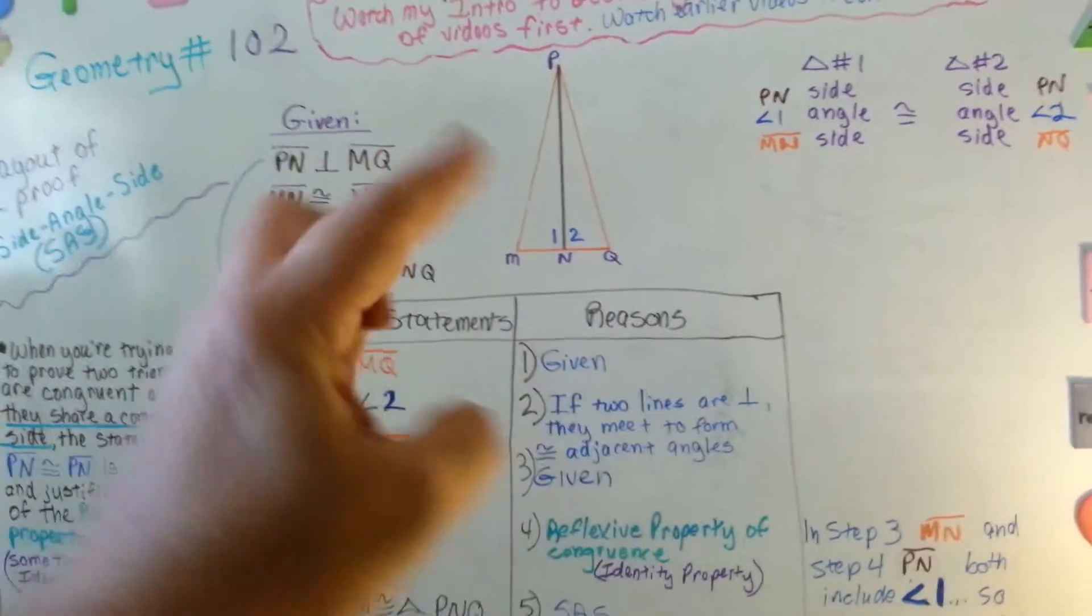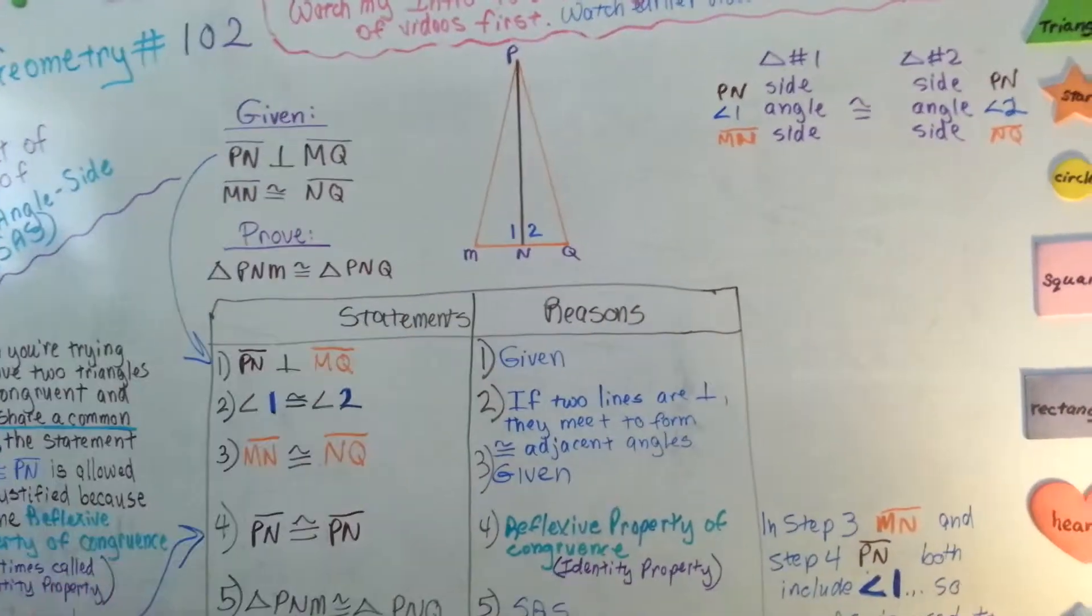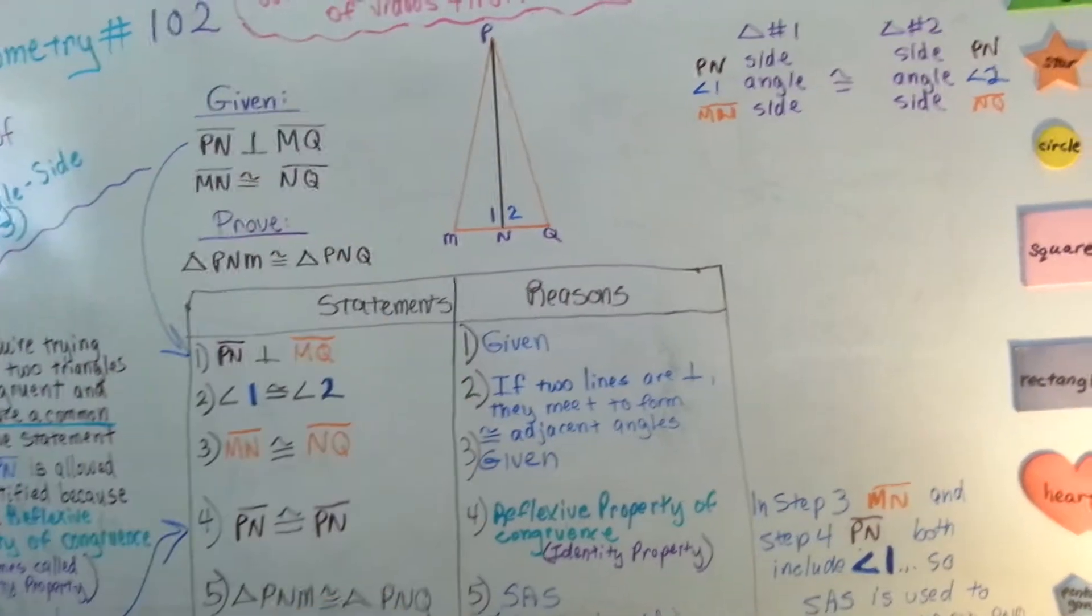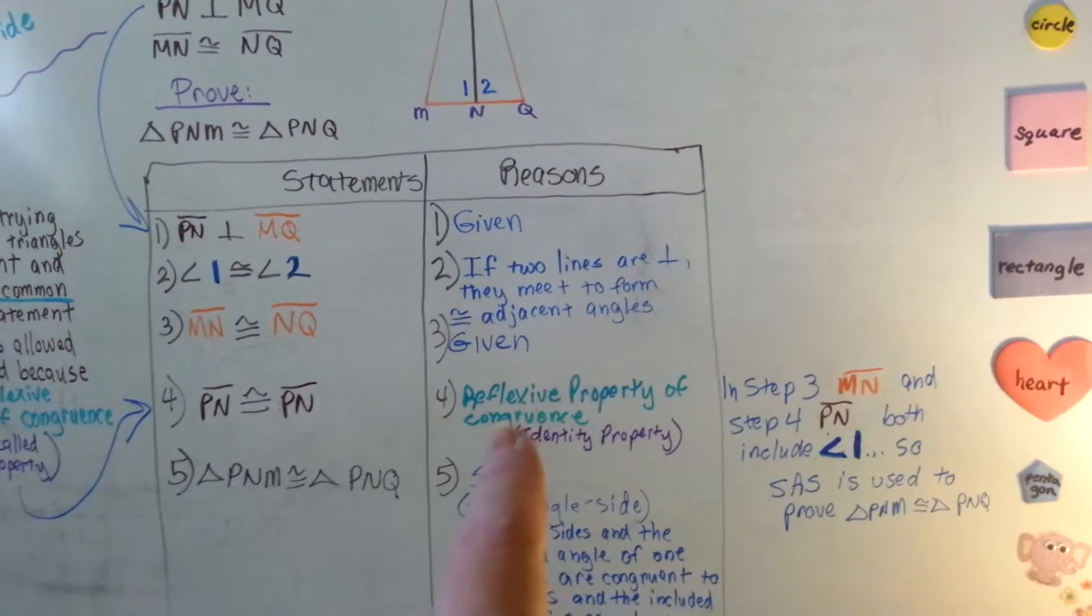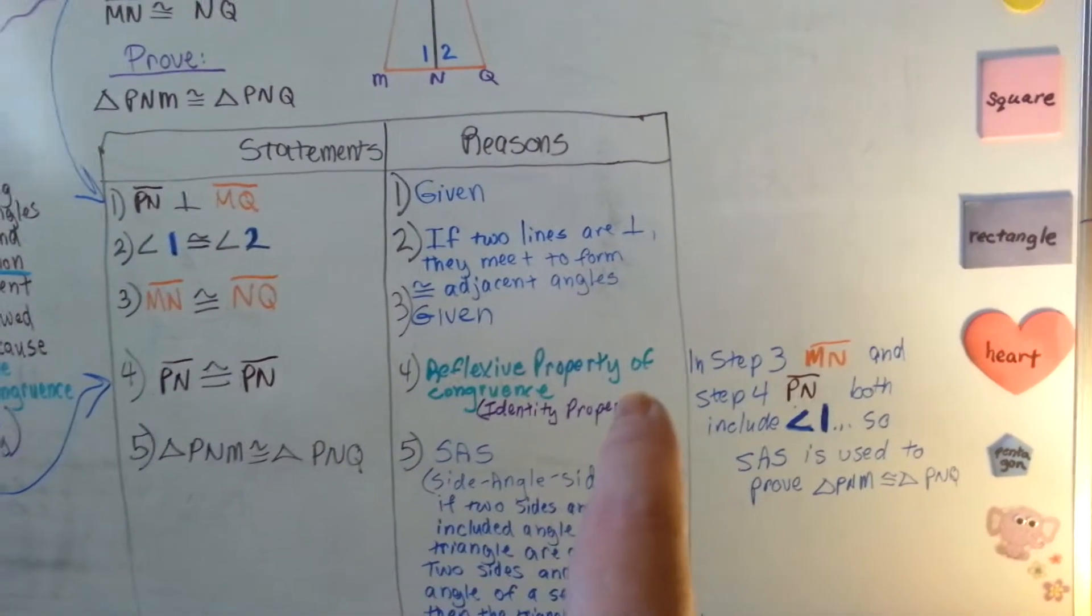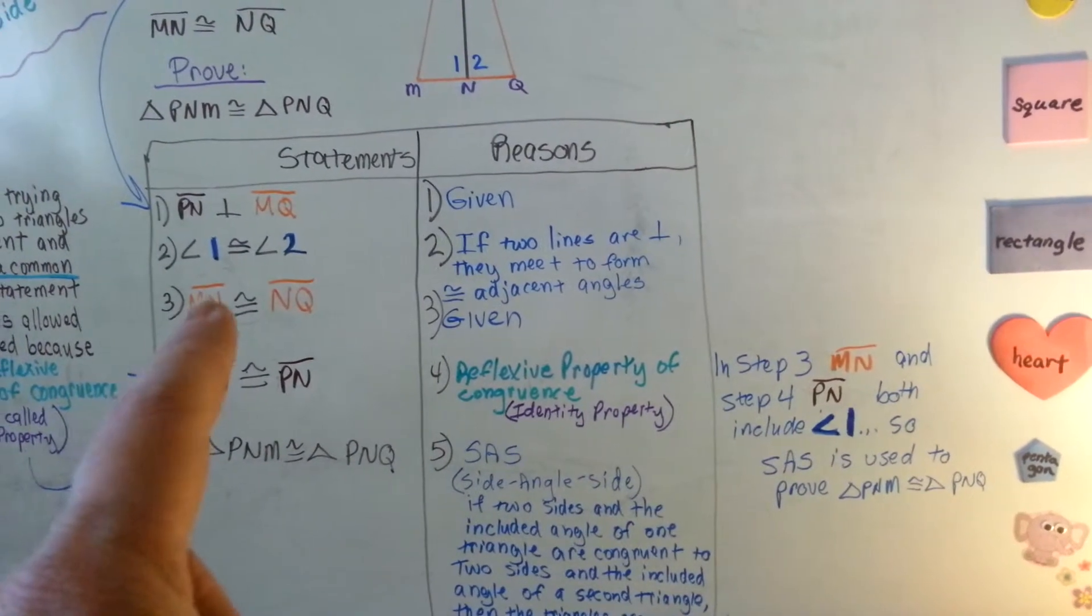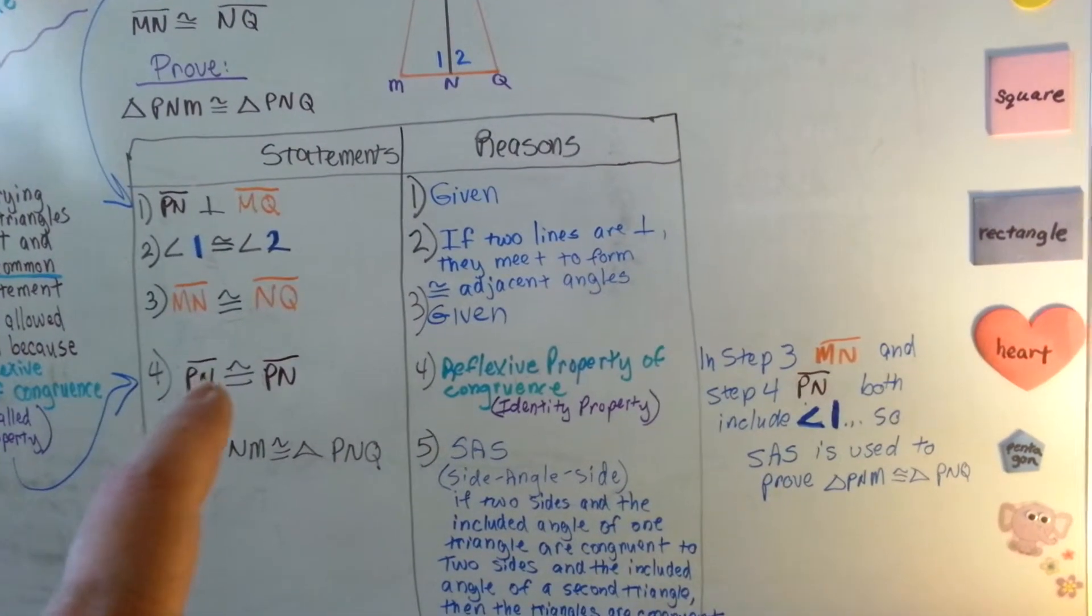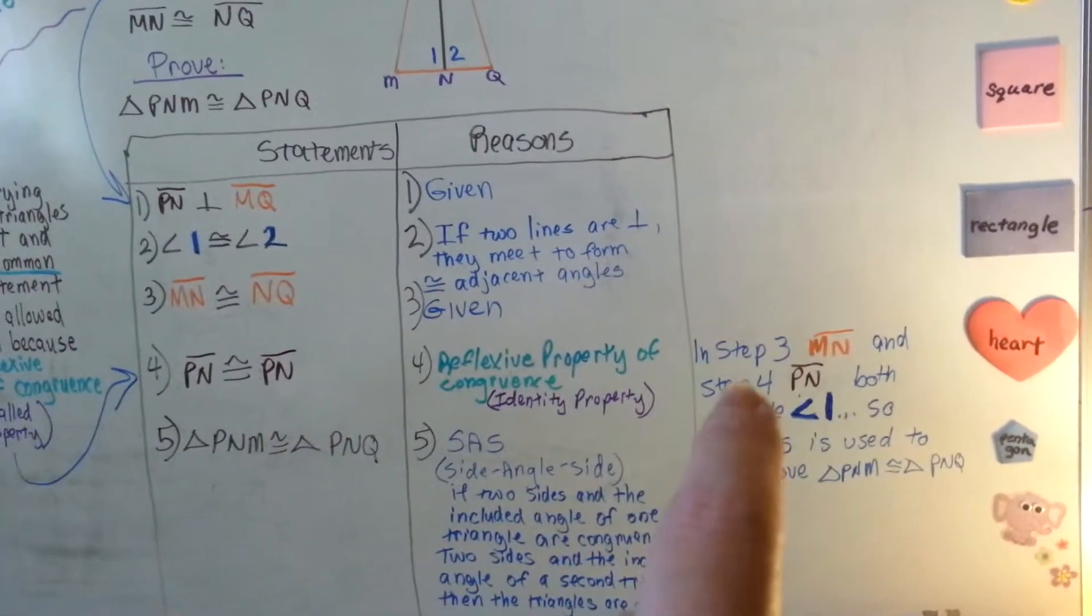So we can say that PN is congruent to PN because they share it. If these were pulled apart and this was PN and the one was XY, we would be able to say they were congruent. So we use the reflexive property of congruence, and if you look in step three we used MN and in step four we used PN.